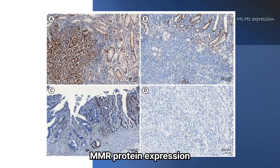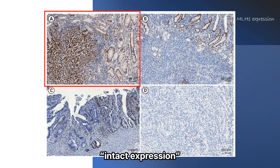MMR protein expression was assessed according to the nuclear staining status of tumor cells. Tumor samples were classified into one of four categories based on the intensity and proportion of nuclear staining across slides. First, intact expression is a state in which all tumor cells and surrounding tissue nuclei adjacent to tumor cells are clearly stained. MMR proficient was defined when all four proteins were intactly expressed.